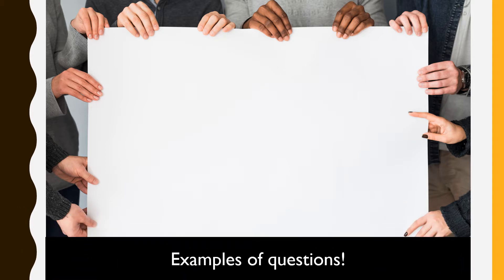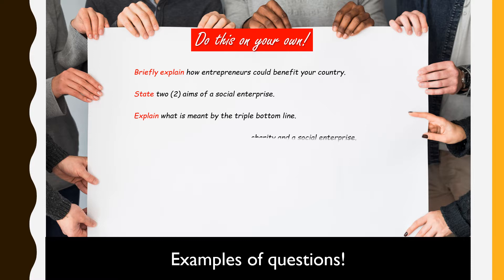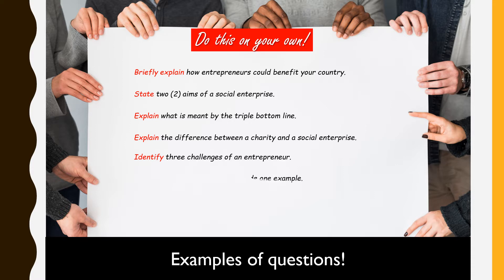Now let's look at some examples of questions that cover knowledge and application, and you may try these on your own. First: 'Briefly explain how entrepreneurs could benefit your country.' Second: 'State two aims of a social enterprise.' Note the highlighted words — you can tell the difference between 'state' and 'briefly explain.' Third: 'Explain what is meant by the triple bottom line.' Fourth: 'Explain the difference between a charity and a social enterprise.' Fifth: 'Identify three challenges of an entrepreneur.' Sixth: 'Define opportunity cost and provide one example.' Now let's look at the marks for each question.